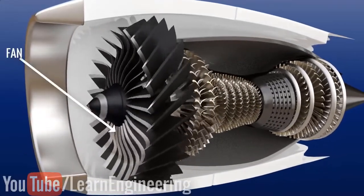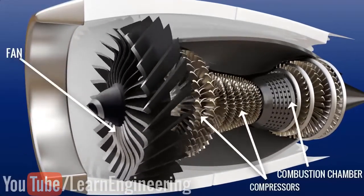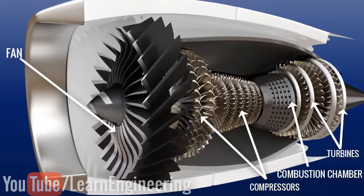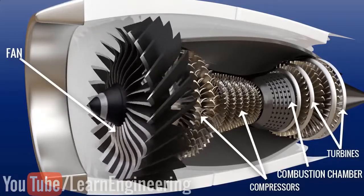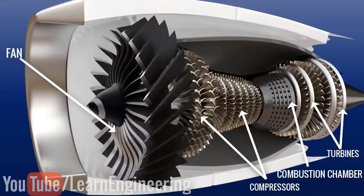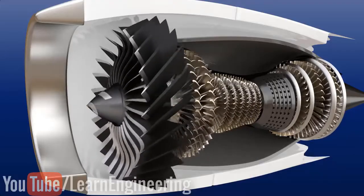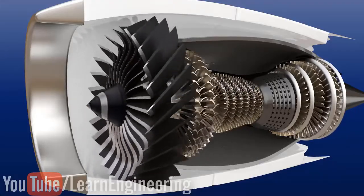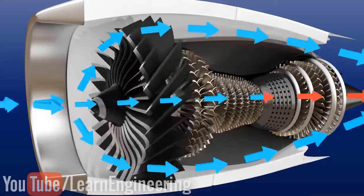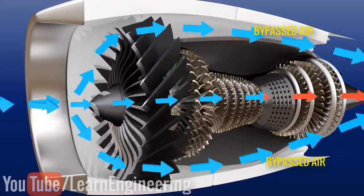The synchronized operation of the fan, compressors, combustion chamber, and turbines generates the necessary thrust to move the airplane forward. You should note that in a jet engine, only a small portion of the incoming air goes into the combustion chamber. The rest bypasses the core engine portion.